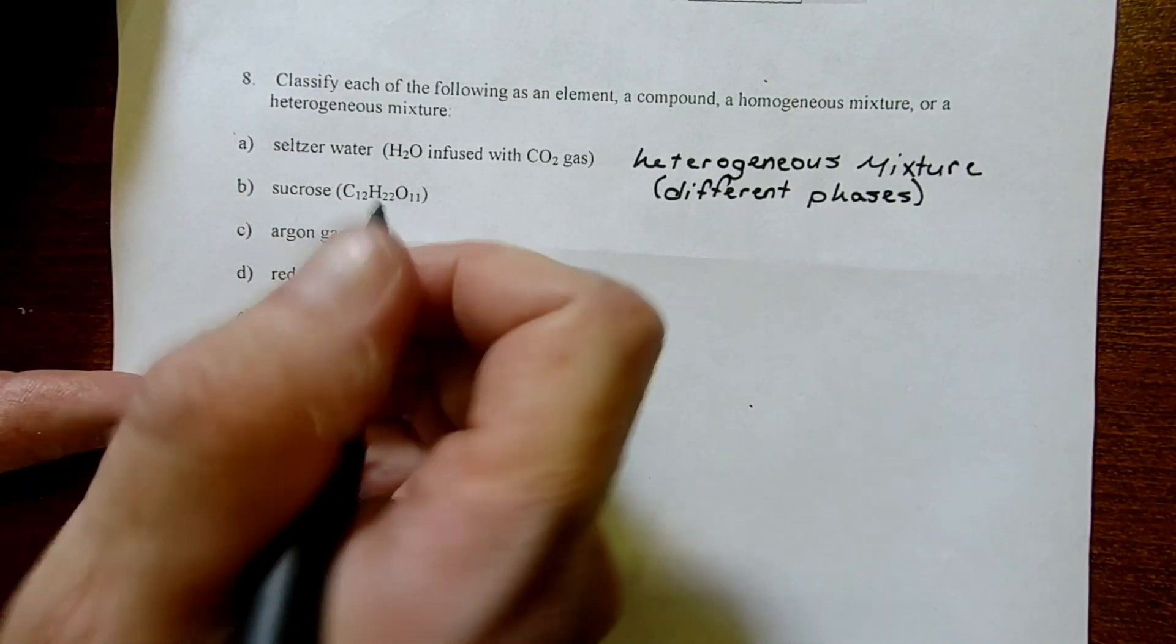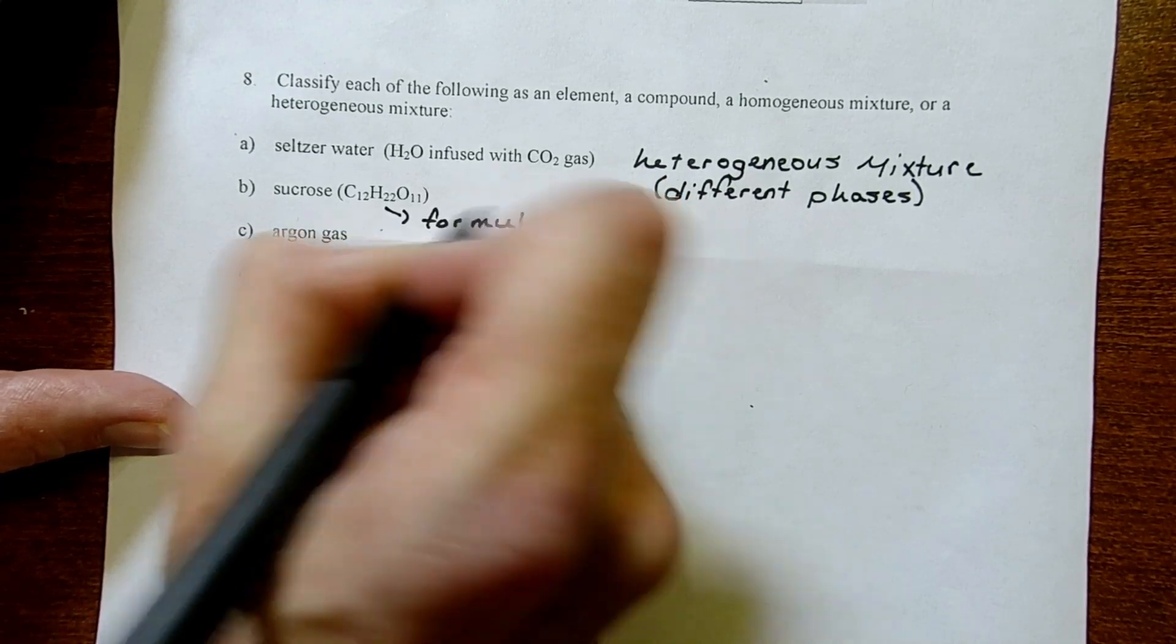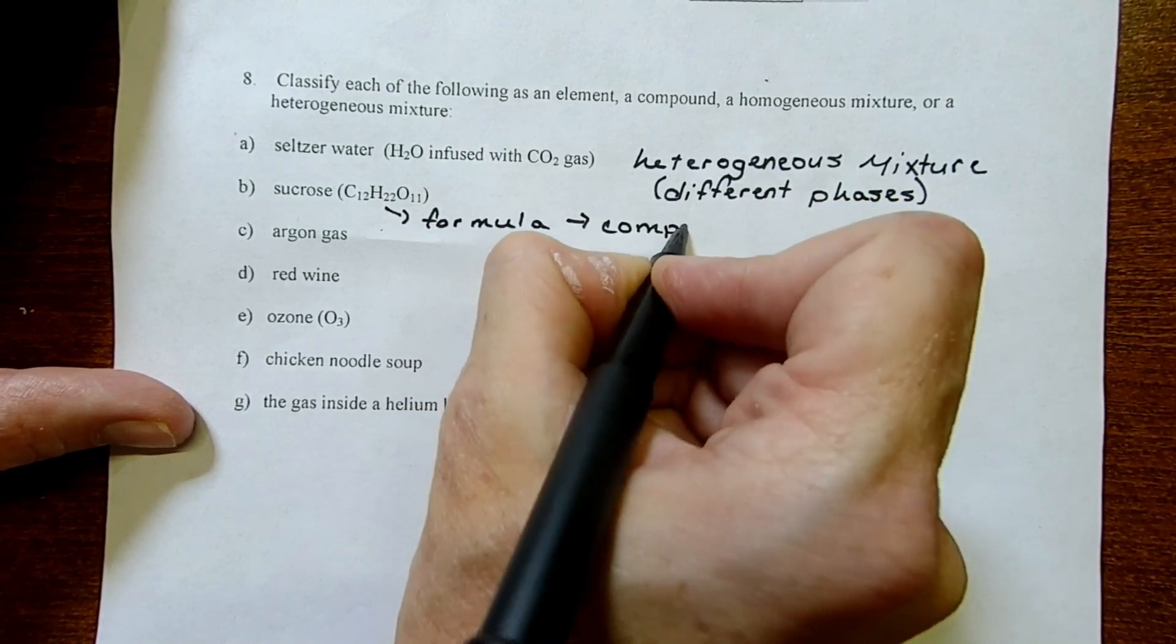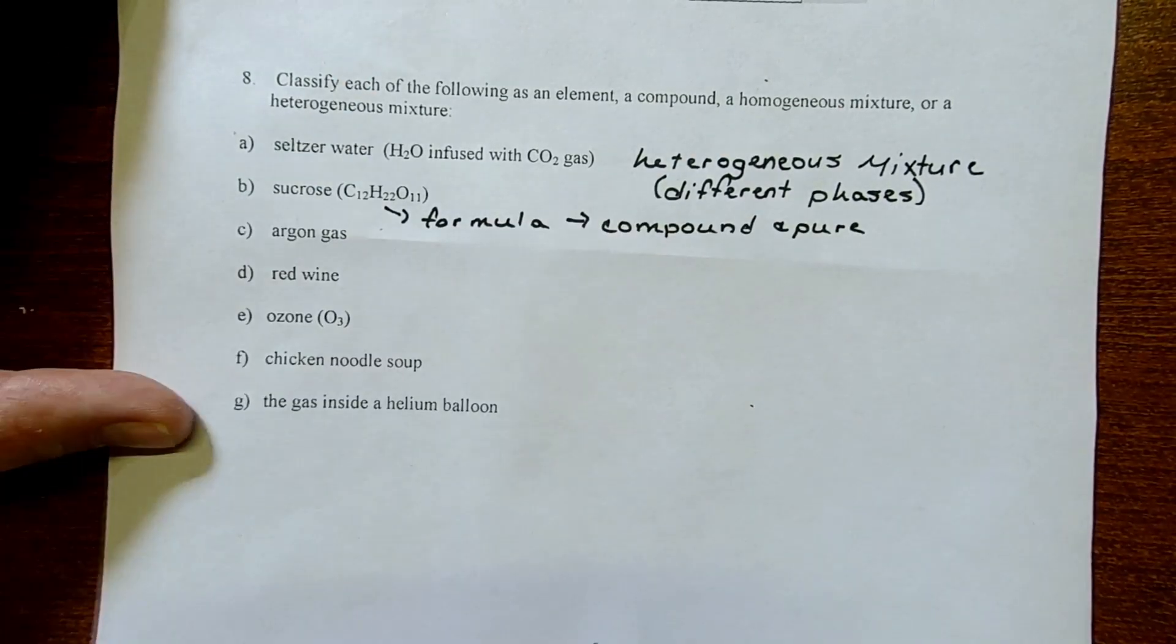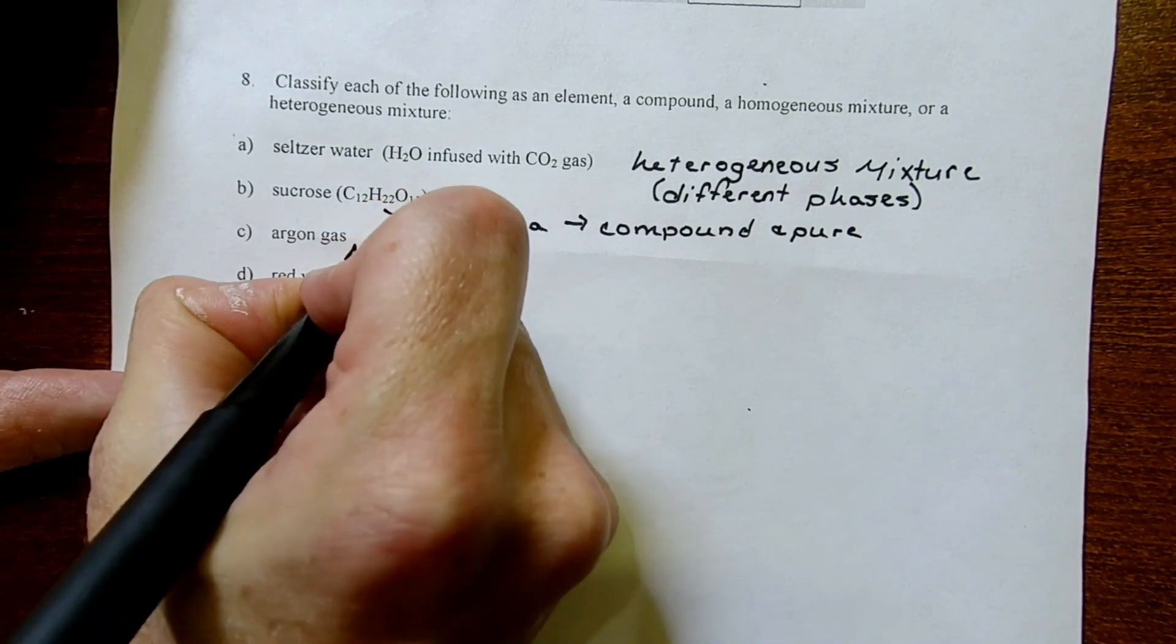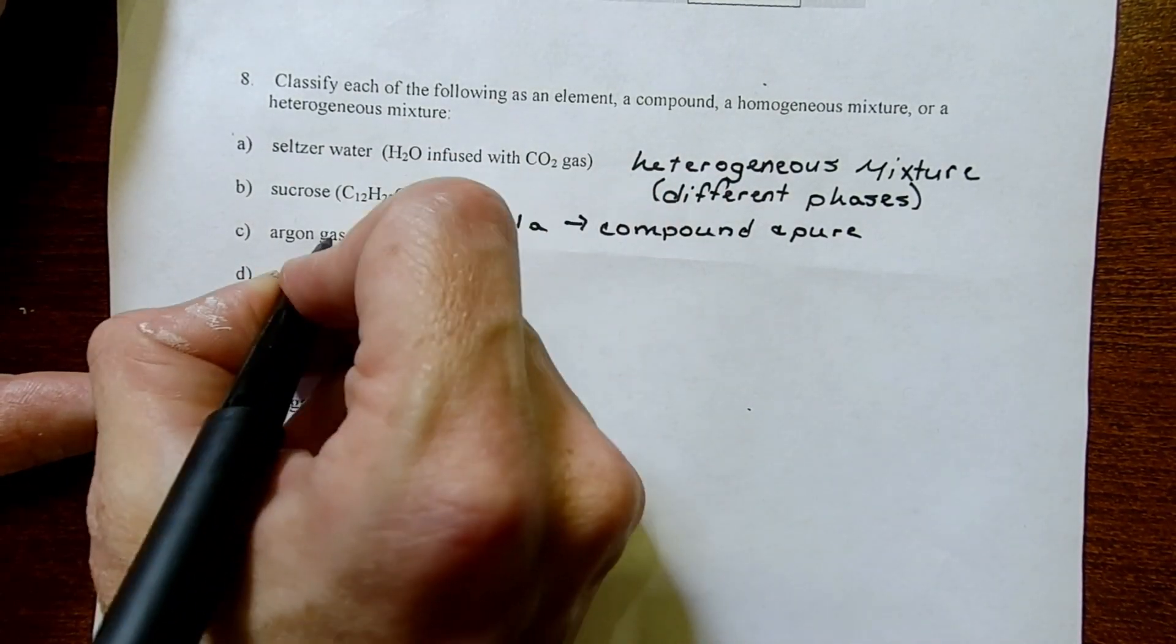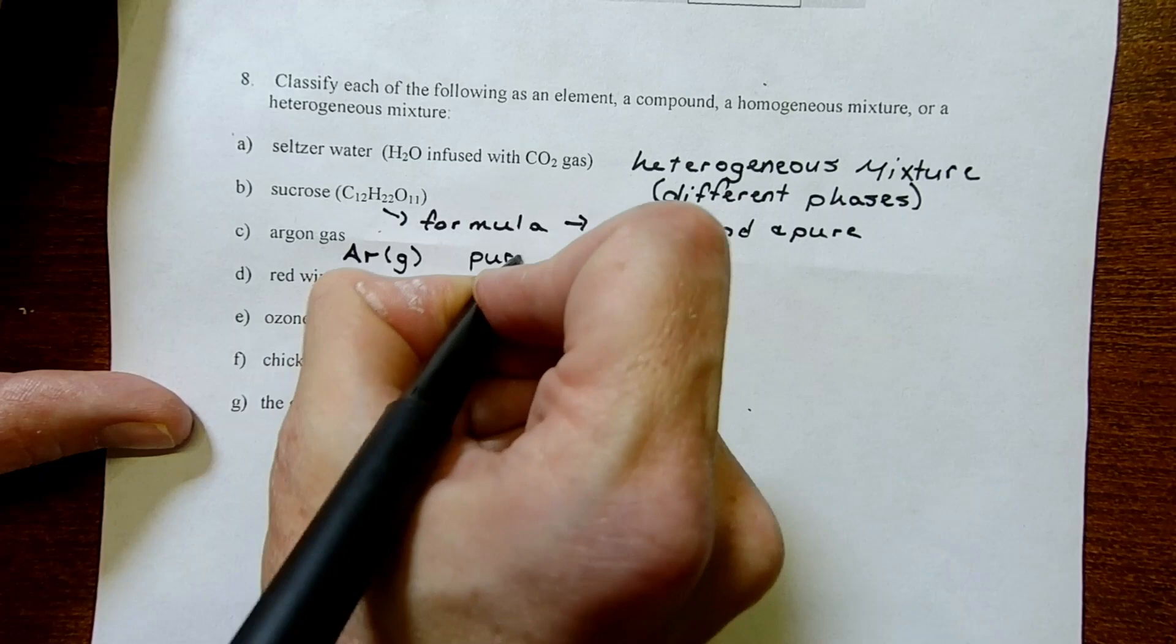Sucrose. They give us the formula for sucrose. If you have a formula, then that's your clue that it's a compound, and it's pure. Argon gas. You might ask yourself, can I write a formula for argon gas? Yeah, it's on the right-hand side of the periodic table, and it's actually just a single element. We don't even need a whole formula. It's just Ar would be its symbol. Since we can write argon gas as Ar, and then we could even put a G to stand for gas, we know that this is a pure element.